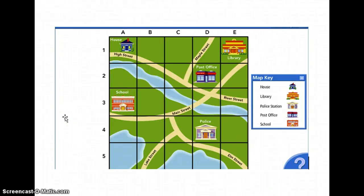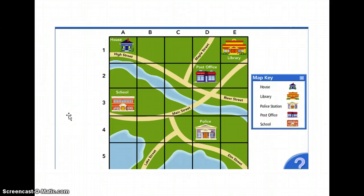The next element of a map we will discuss is a grid. A grid sections off a map into different parts. If someone were to tell us the police station is in row 4 and column D, we would know where it is by going to row 4 and then column D.